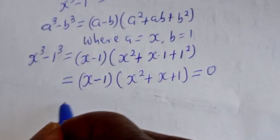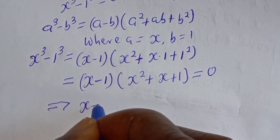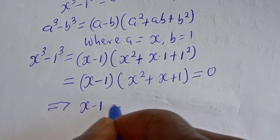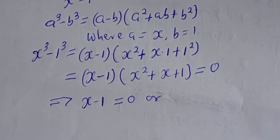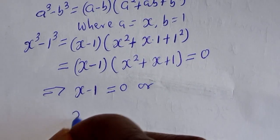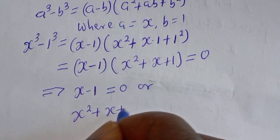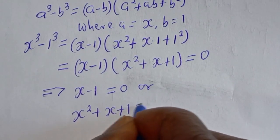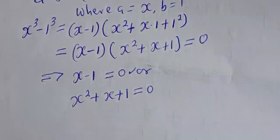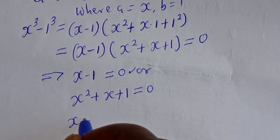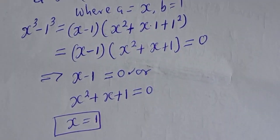So we have s minus 1 equals 0, or s squared plus s plus 1 equals 0. From the first case, s is equal to 1. This is the first value of s.